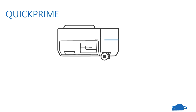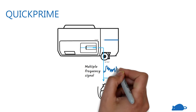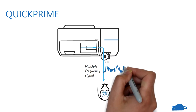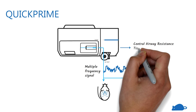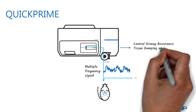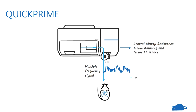In the quick prime measurement, the lungs are given a multiple frequency signal above and below the subject's respiratory rate. The flexi-vent can then separate the contributions from the central airways and peripheral lung tissue to give central airway resistance, as well as tissue damping and tissue elastance.